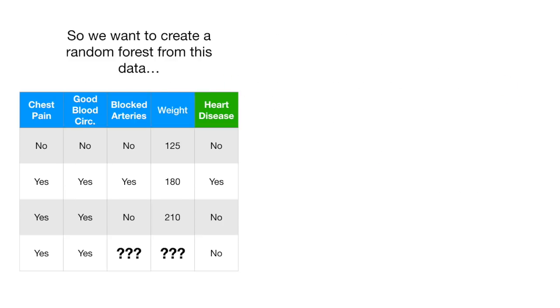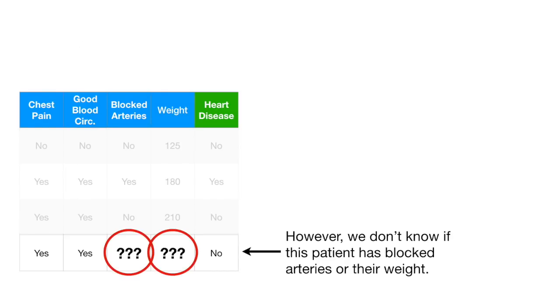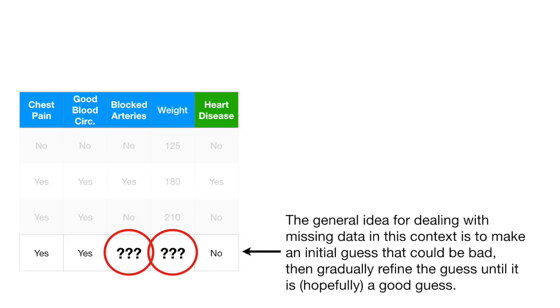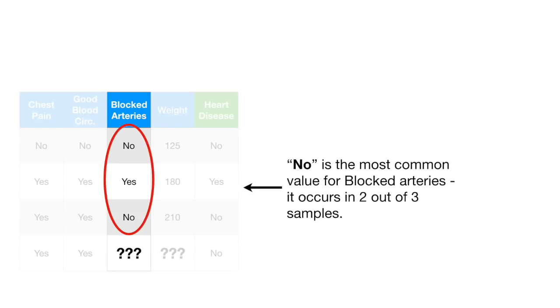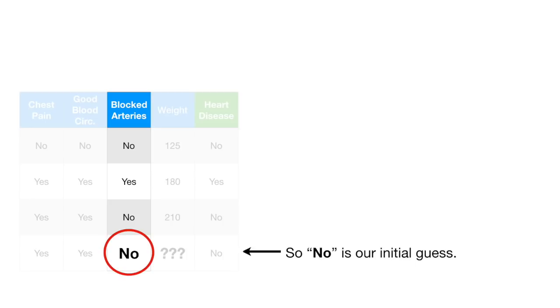So we want to create a random forest from this data. However, we don't know if this patient has blocked arteries or their weight. The general idea for dealing with missing data in this context is to make an initial guess that could be bad and then gradually refine the guess until it is hopefully a good guess. So the initial, possibly bad, guess for the blocked arteries value is just the most common value for blocked arteries. No is the most common value for blocked arteries. It occurs in two out of three samples. So no is our initial guess.